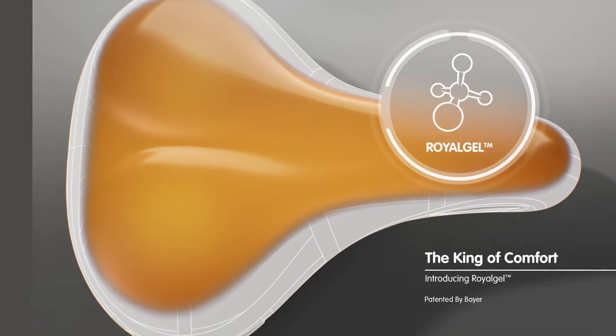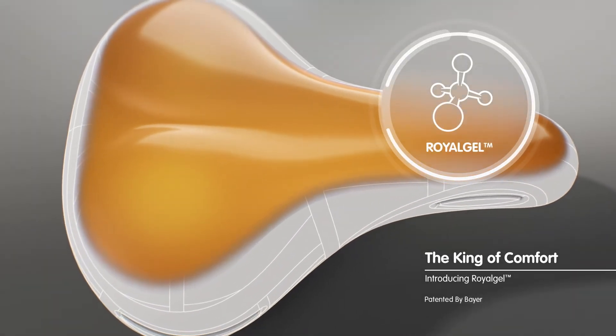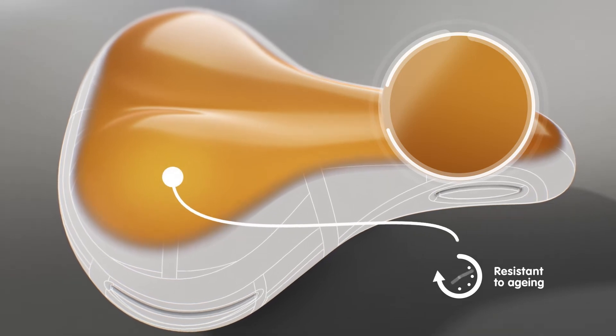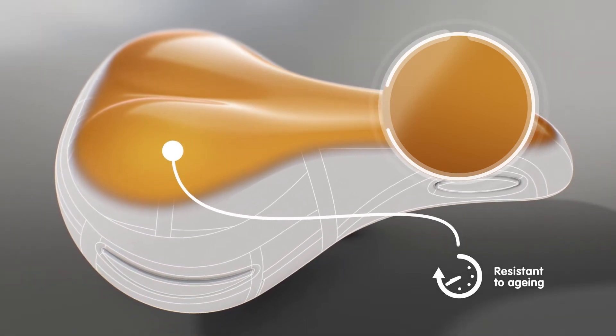Royal Gel is a unique soft solid padding material made from a non-toxic compound that doesn't age, harden or migrate.